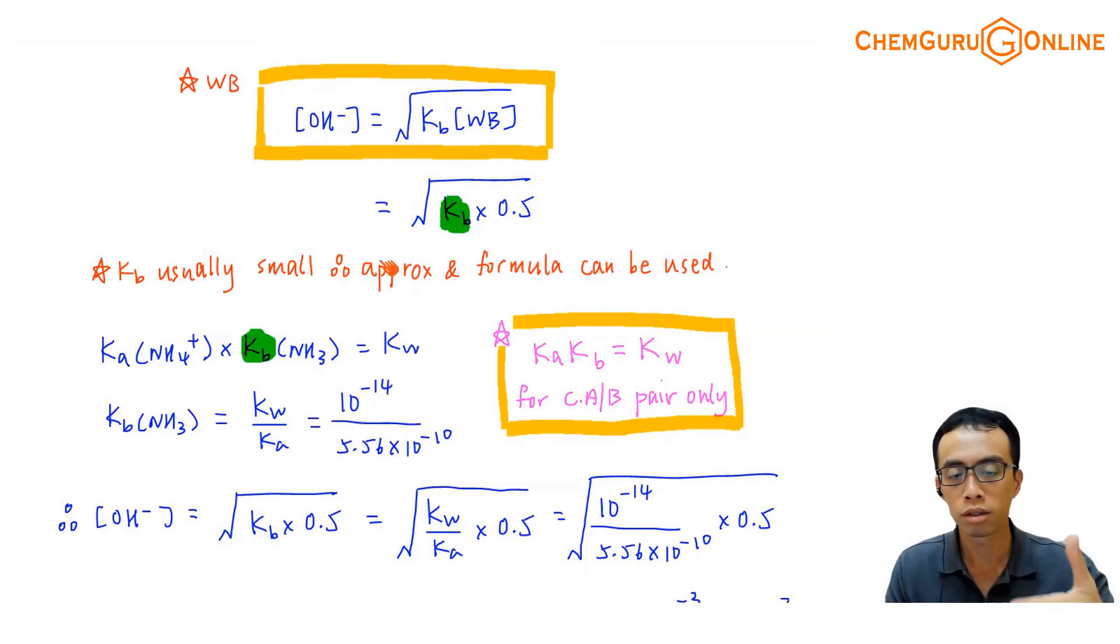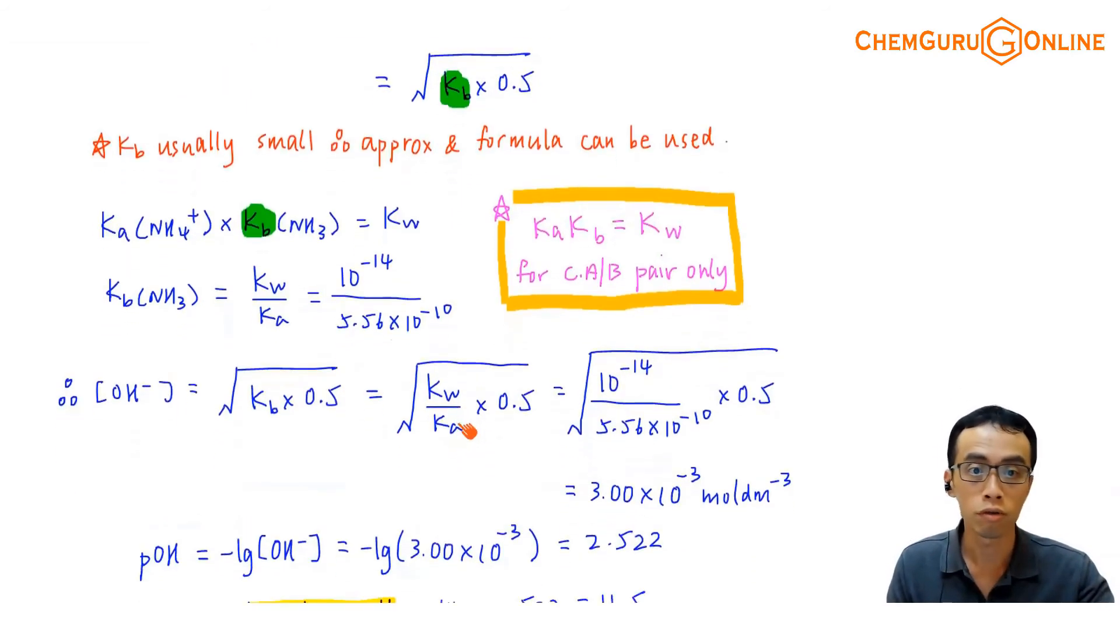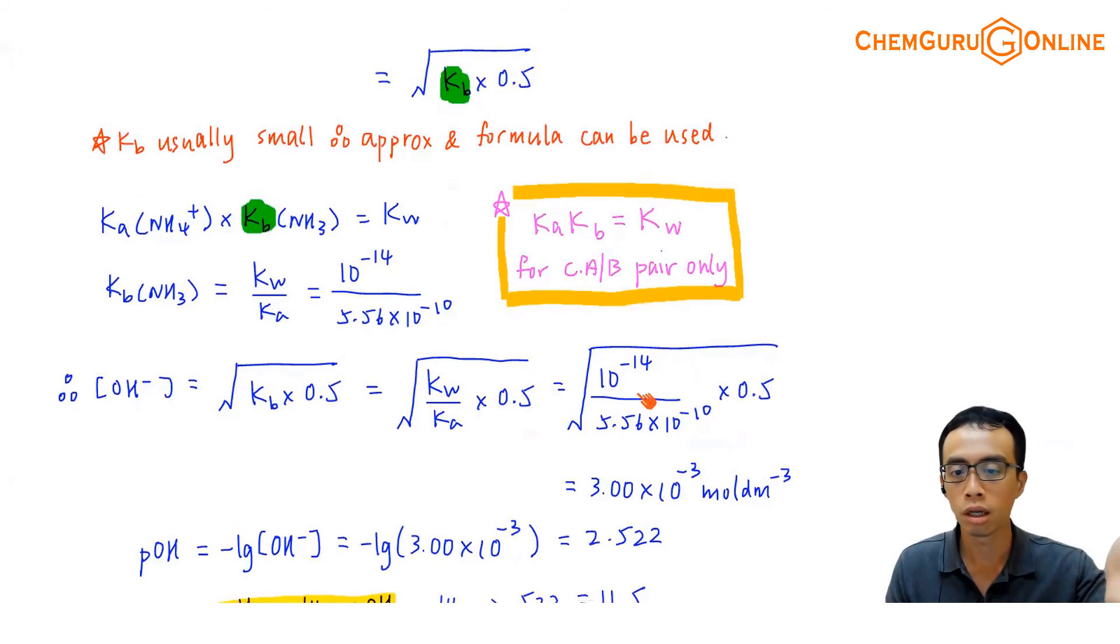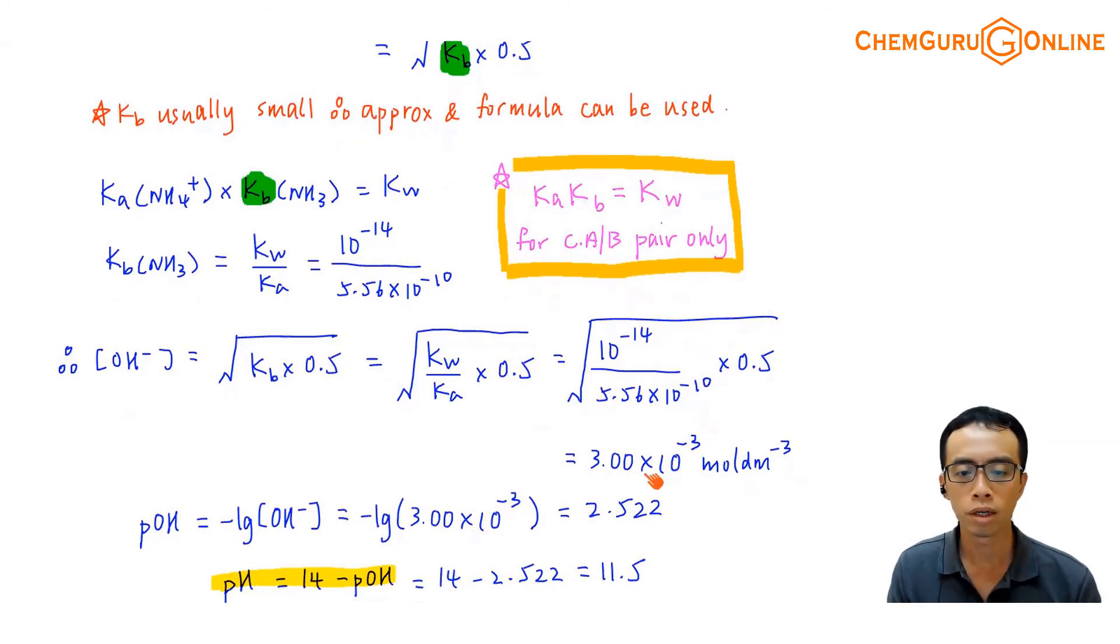When we do the calculation, OH- is the square root of Kb times 0.5. We look for Kb in the question - it's not there. Then automatically we switch to: Kb is just Kw divided by Ka. I'll substitute Kw is 10 to the power of minus 14, Ka is this given value, and the concentration for ammonia is given. Then I can find my OH- concentration: 3 times 10 to the power of minus 3.